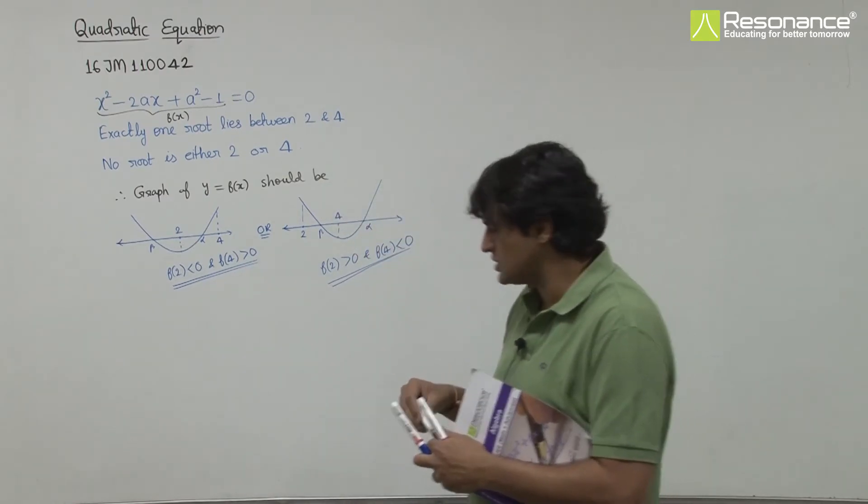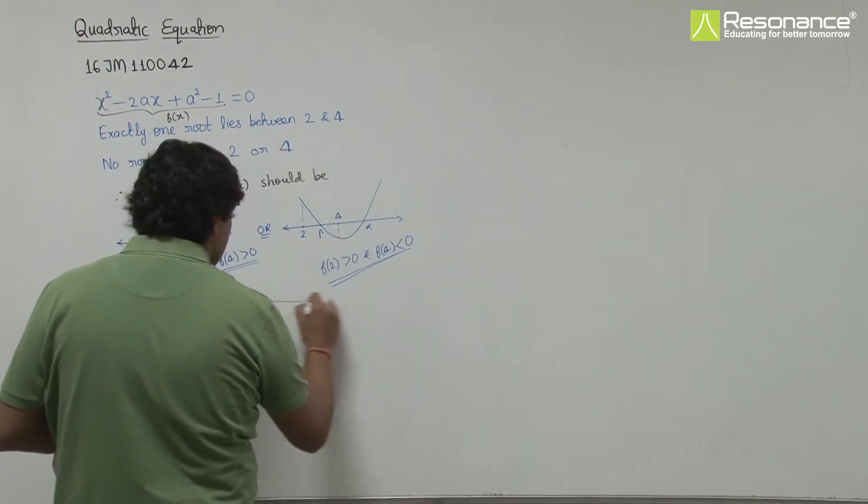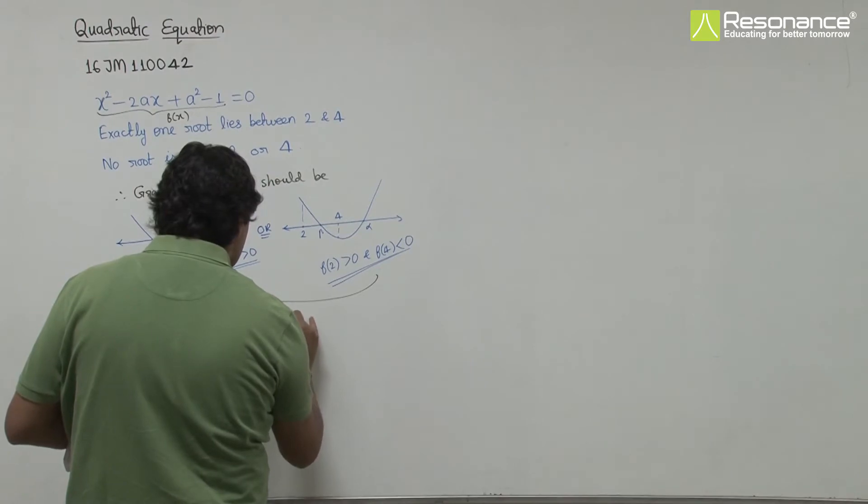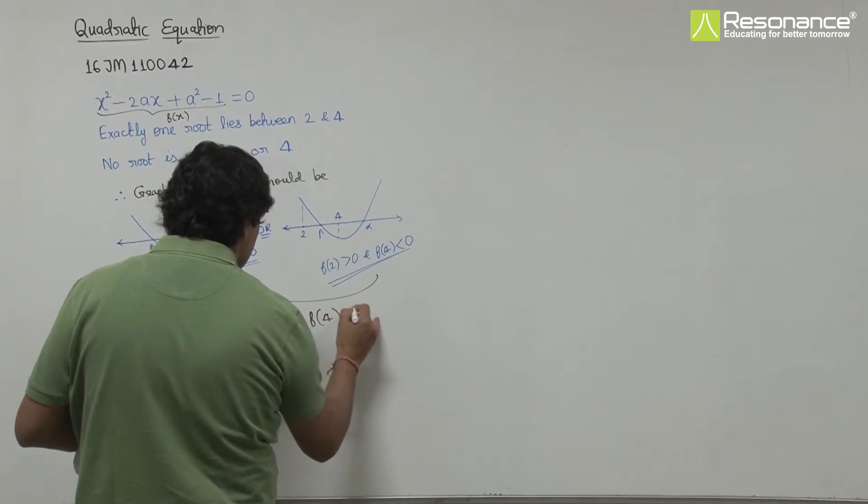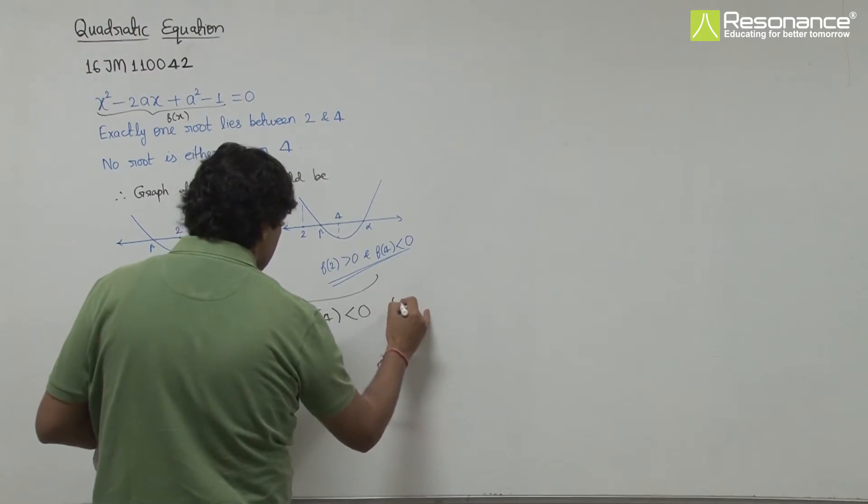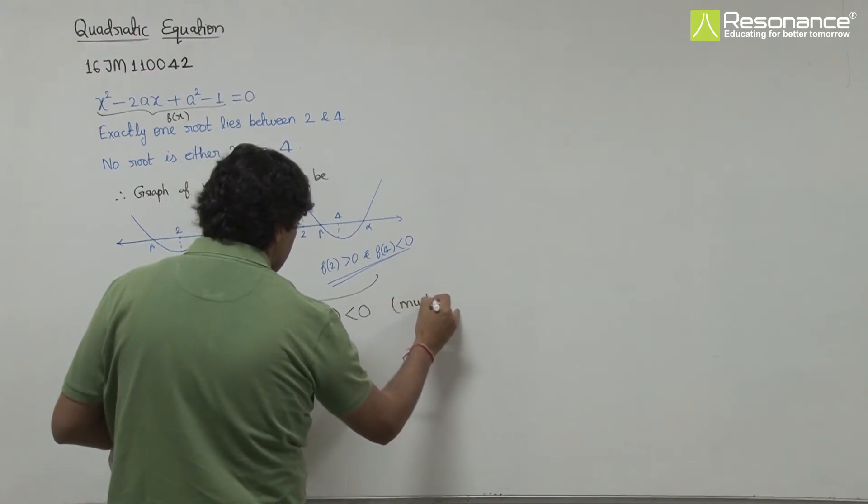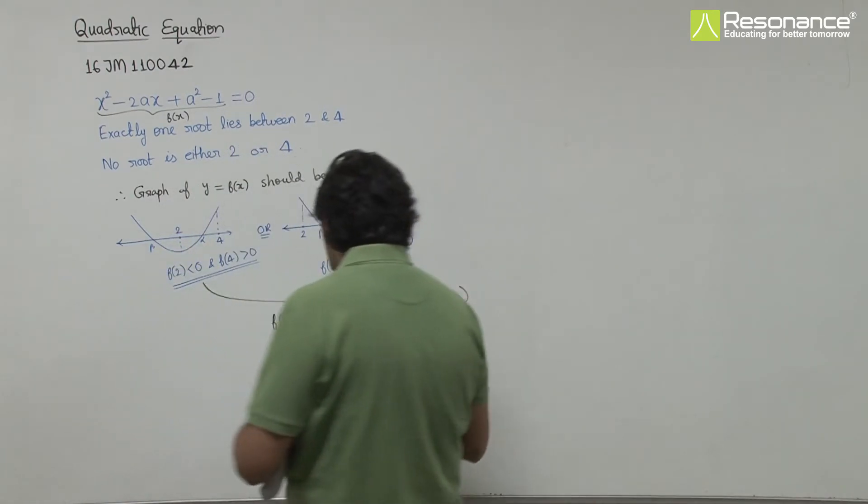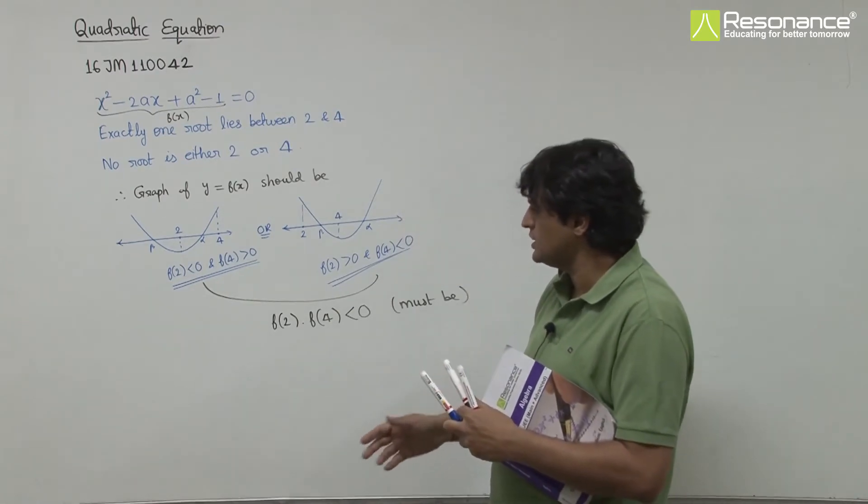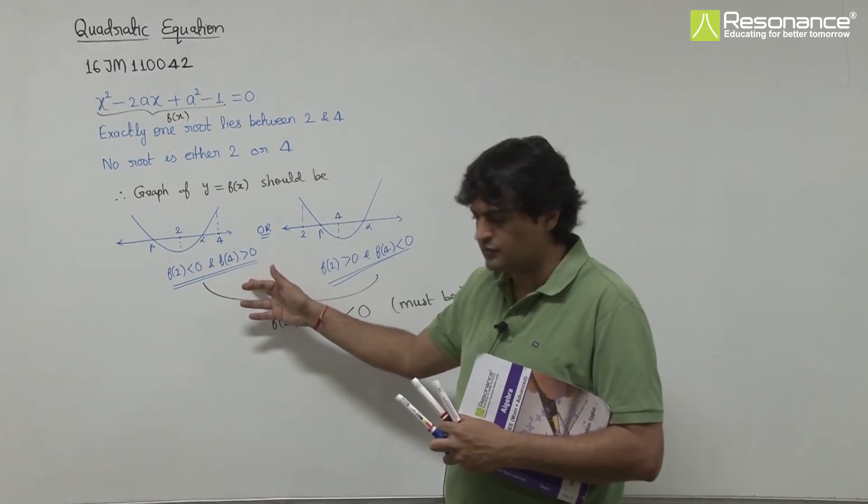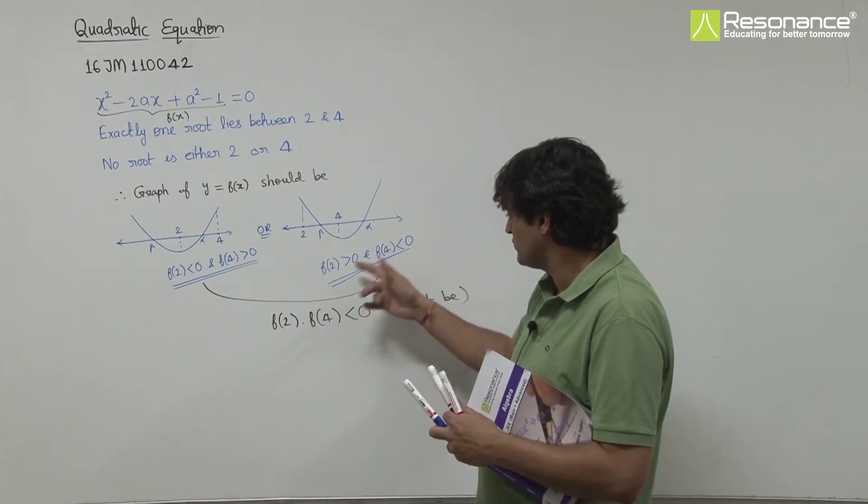Combined, we can say that at 2 and 4 there should definitely be opposite signs. Either negative at 2 and positive at 4, or positive at 2 and negative at 4. So let's solve this.